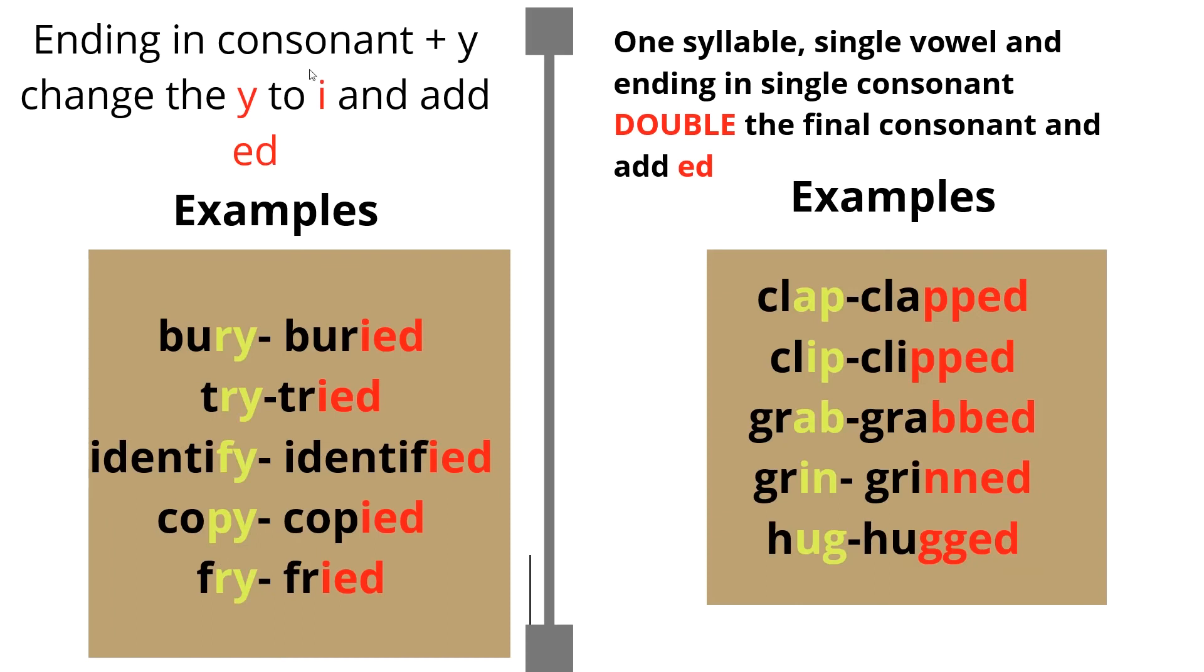Words ending in consonant plus Y, we change the Y to I and then we add ED. For example, bury, buried. We have changed our Y to I and we have added ED. Try, tried. Identify, identified. Copy, copied. Fry, fried.